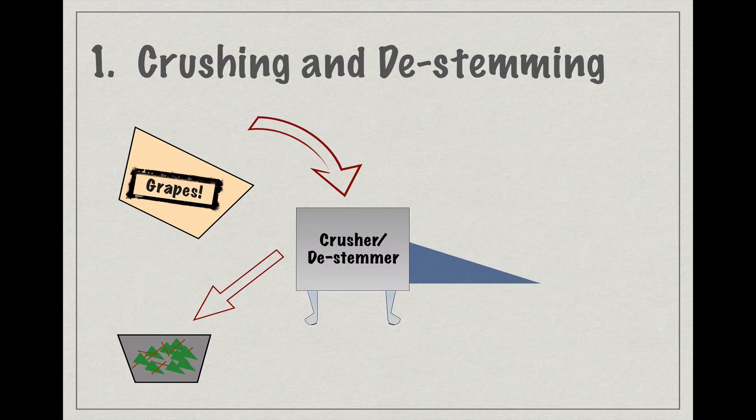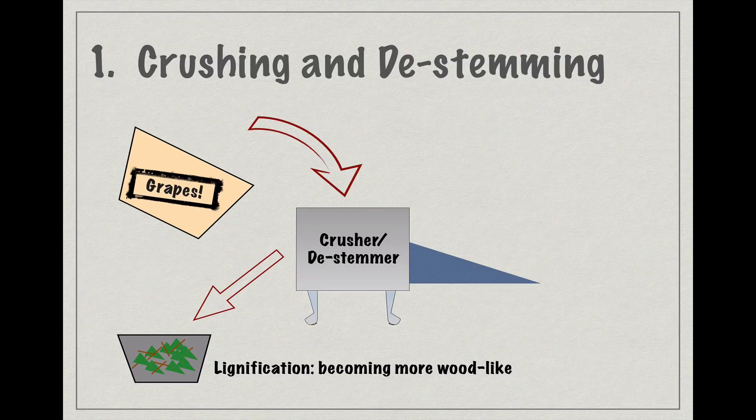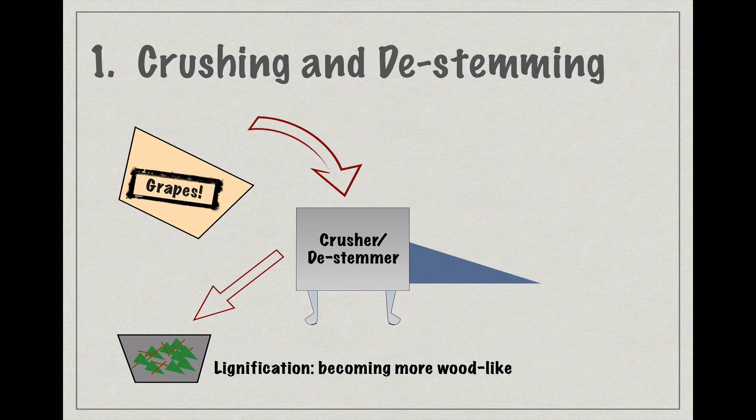Stems can add tannins and flavor compounds that can, depending on how dry or lignified the stems are, be bitter, herbaceous, or, in the case of dry or more lignified stems, more like brown baking spices.